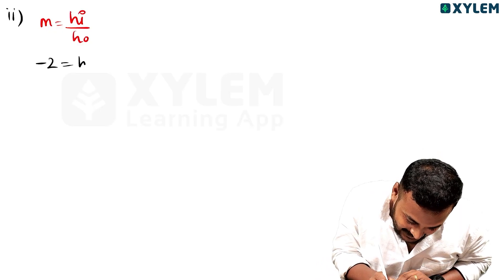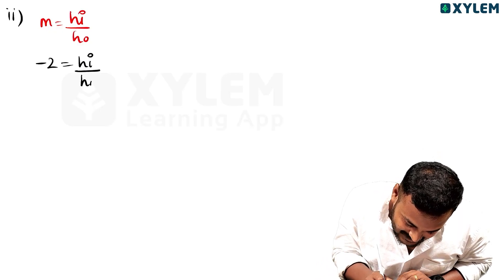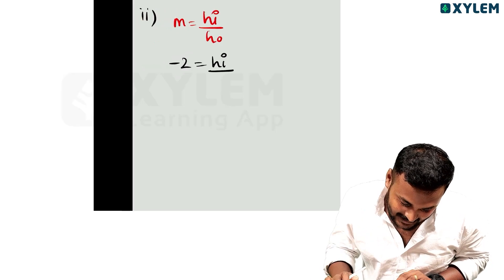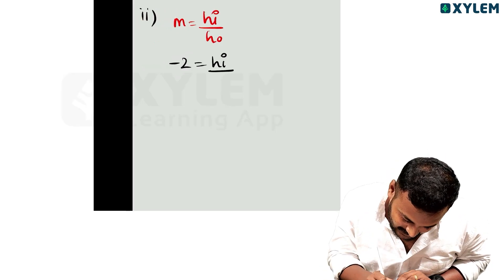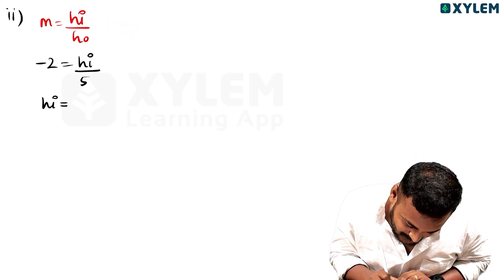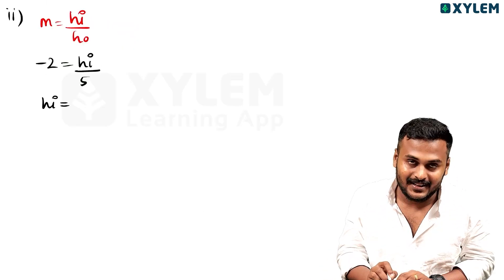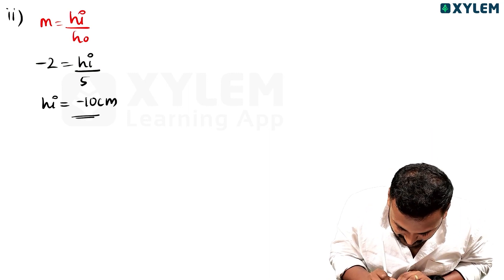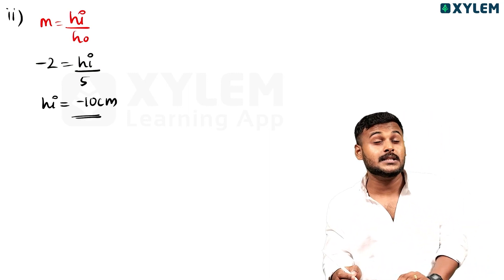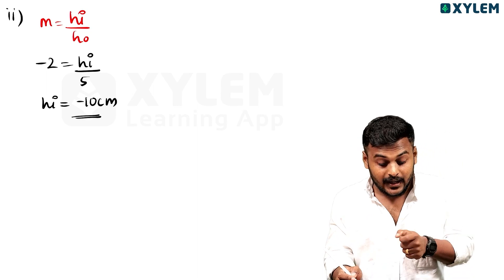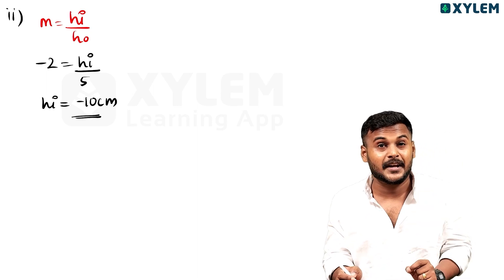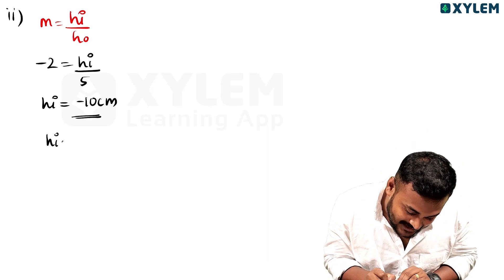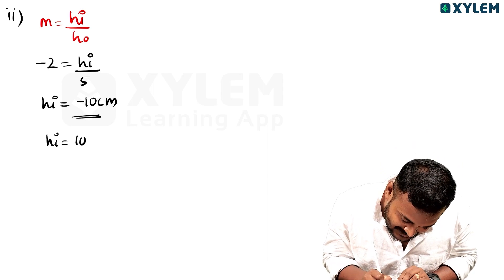Minus 2 equal to hi divided by h-naught. So hi equal to minus 10 centimeter. The height of the image hi equals minus 10 centimeter, so the magnitude is 10 cm.